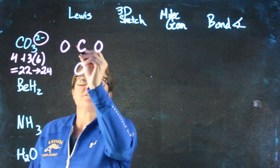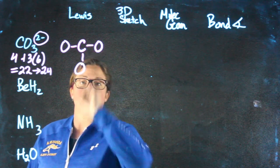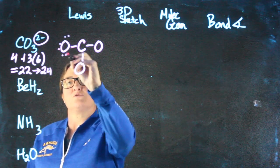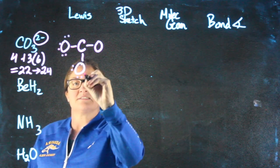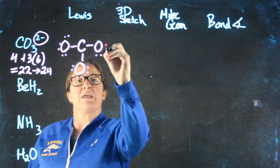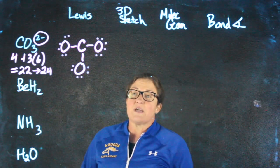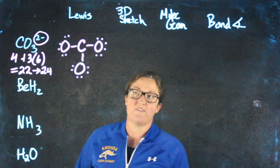Starting off with single bonds, counting 2, 4, 6, 8, 10, 12, 14, 16, 18, 20, 22, 24. Now I'm going to check to see if I've satisfied the rule of octet for everybody.